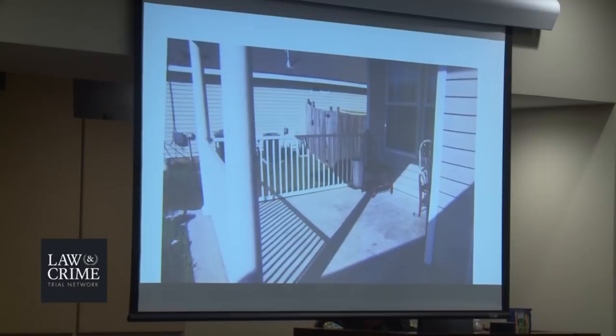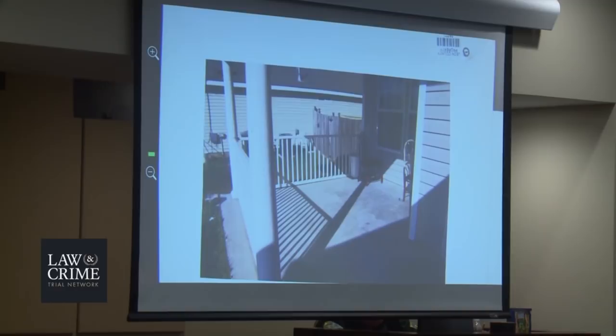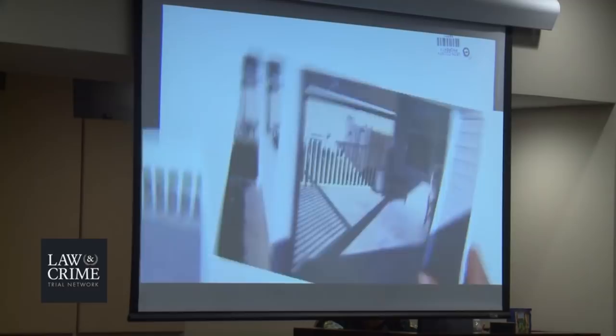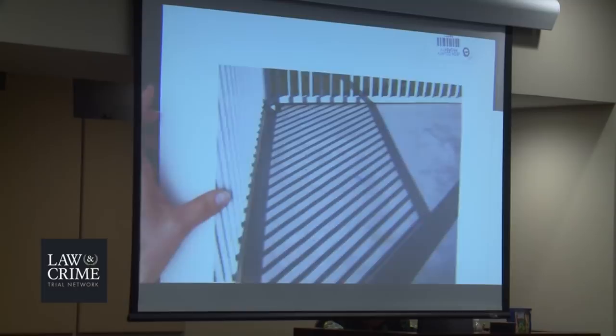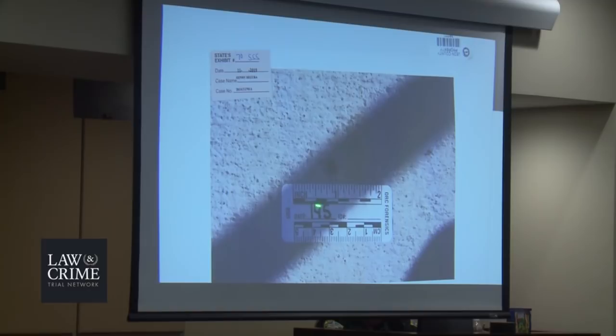Did you process the scene not only on November 20th, but also two days later when you came back with your team to continue processing the scene? Yes. Too much of a scene to do it all in one day? We wanted to make sure we could get everything possible. Looking at 70 QQQ, what do we see here? This is to the left of the front door area — the front door would be just out of the frame. This was the front porch area. There was some suspected blood found on the ground. In 70 RRR — the same front porch, and the suspected blood was in one of these shadows. In 70 SSS — that is the drop of suspected blood found just outside with a scaled-numbered marker right next to it. Did you swab that suspected blood? Yes ma'am.